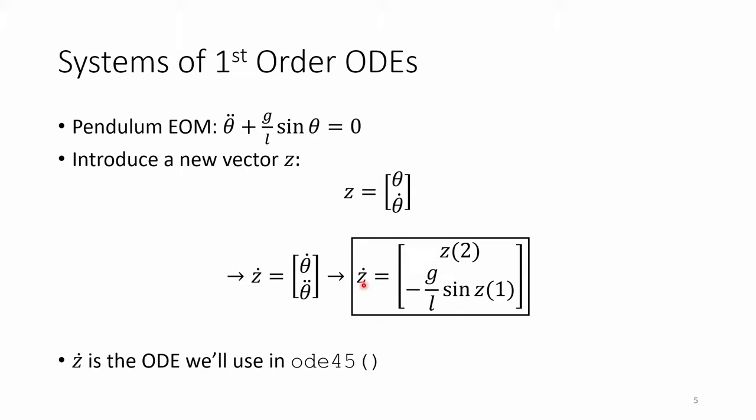So here's the Z dot vector written in terms of the Z vector. This is how we converted the second-order equation of motion into two first-order ODEs. This process is a precursor to something called state space, which is heavily used in vibrations and controls. In the next video, we'll code this in MATLAB.